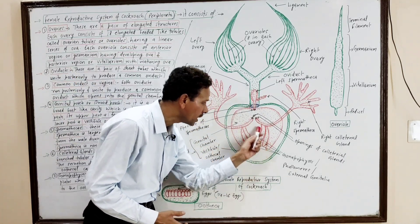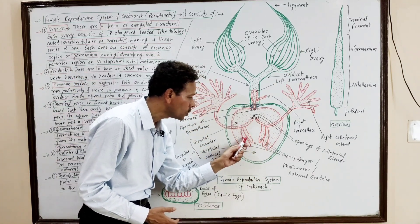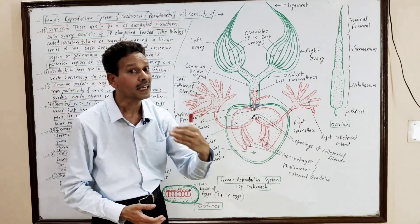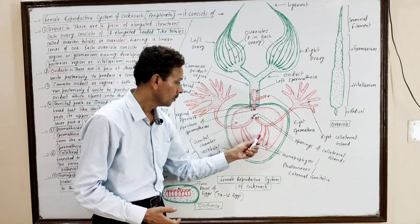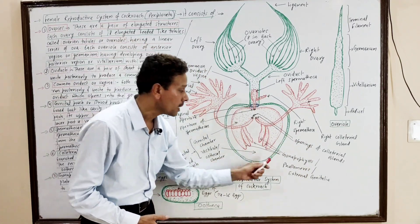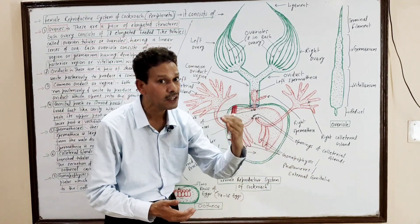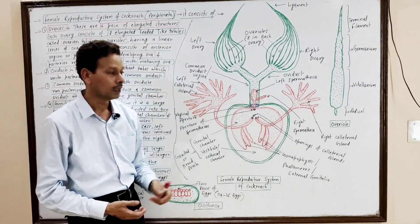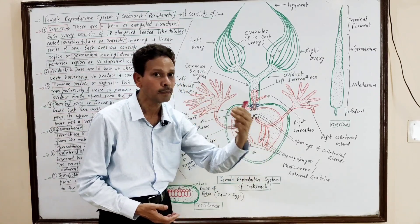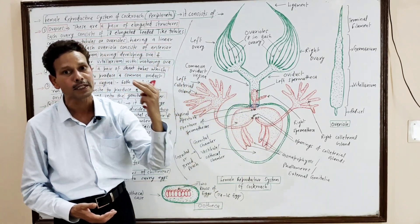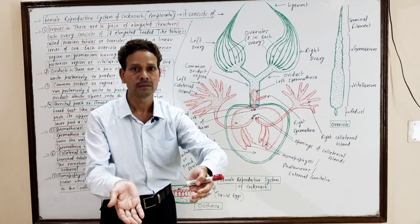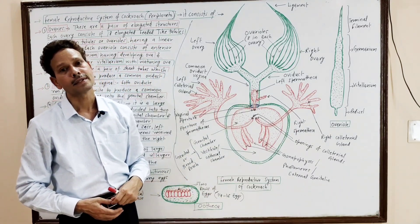In the posterior region of the brood pouch, there are three pairs of chitinous gonapophyses — also called phallomeres or external genitalia. These six chitinous structures, or three pairs of chitinous phallomeres, are the external genitalia which hold the eggs.